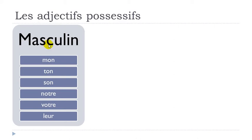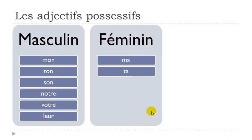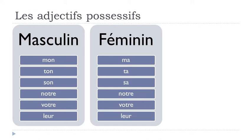We saw the masculine form — now let's check the feminine form: MA, TA, SA. You can see the pattern: MON/MA, TON/TA, SON/SA. The good news is that NOTRE is the same, VOTRE is the same, and LEUR is the same — no difference between those three persons.